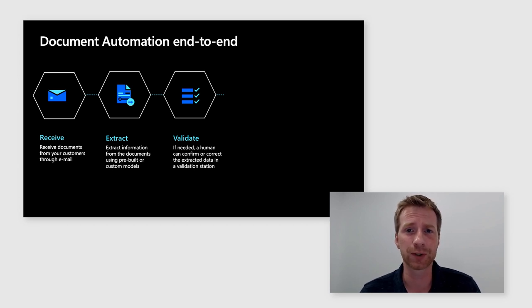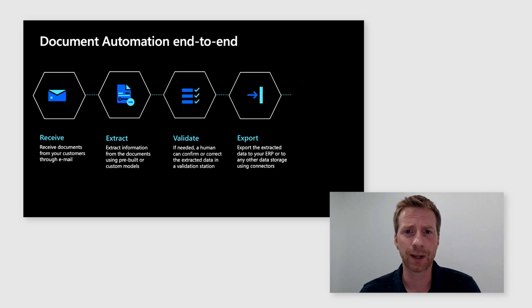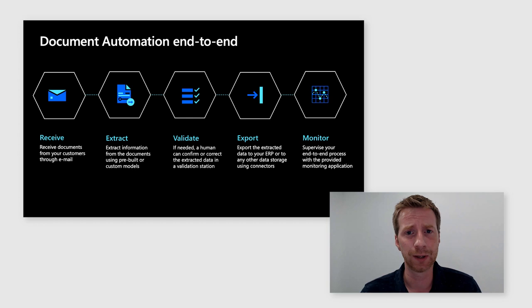The validation station allows you to verify extracted content and approve or validate it, or send it for a more complex approval process. There are also pre-configured extraction and export possibilities, as well as monitoring tools to track how many documents you've been able to process. Next, Joe will walk us through how to set up the document automation solution — our starter kit — to configure an end-to-end intelligent document processing process.